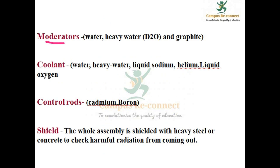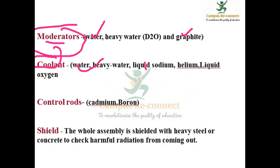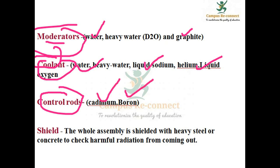In a nuclear plant, water or graphite is used as a moderator. The coolant is liquid sodium, helium, or liquid oxygen. Cadmium or boron is used as the control rod. The shielding is made of steel or concrete.